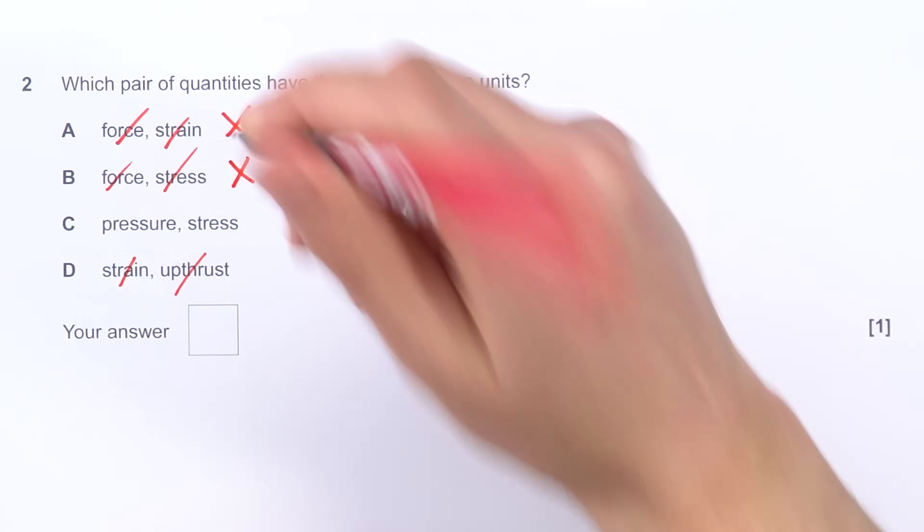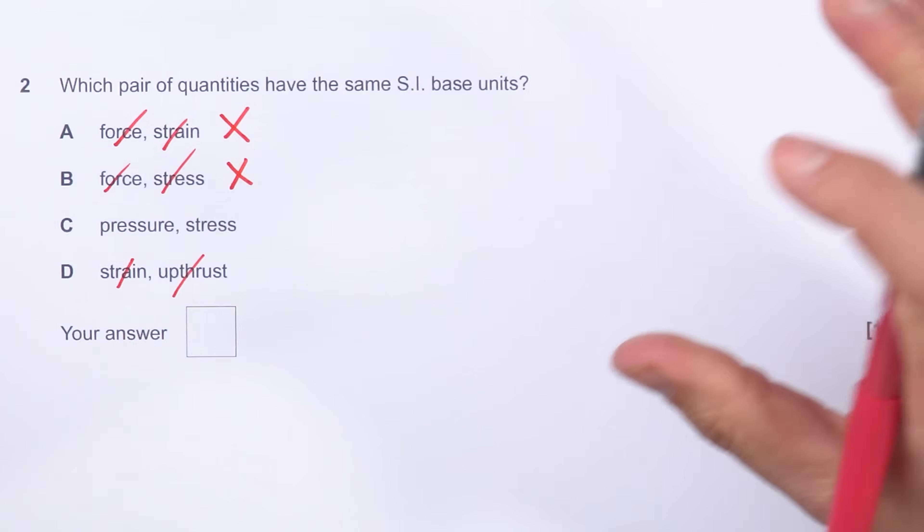And that means, maybe in the exam, you can just strike through or put a big cross by the ones which you know are definitely incorrect. And then, if it's a question you're not sure about, rather than it being a one in four chance of being correct, it's maybe just one in two.